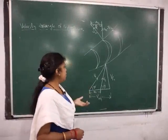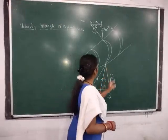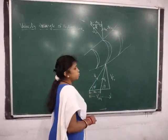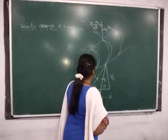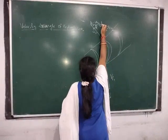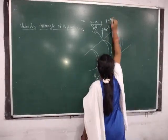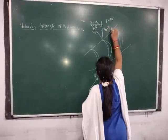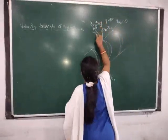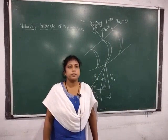This is the velocity triangle for a Kaplan turbine. V1 has a vertical component V_F1 (velocity of flow) and a horizontal component V_W1 (whirl velocity at inlet), and V_R1 is the relative velocity. In the case of a Kaplan turbine, the beta angle equals 90 degrees at the outlet. So V_R2 equals V_F2, V_W2 becomes 0, the total part equals U2, and V2 is the outlet absolute velocity. These notations are the same as already explained for Francis turbine.